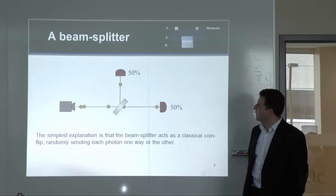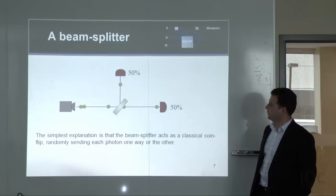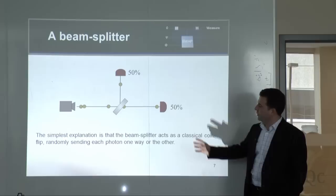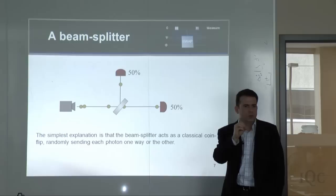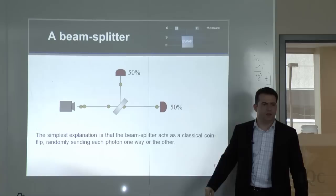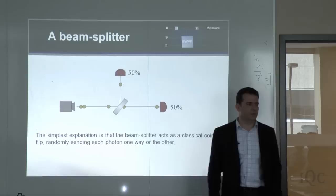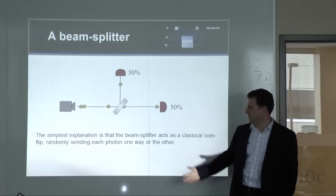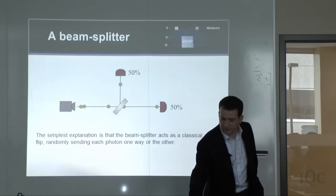Let me do quantum mechanics 101. You have a particle source — say photons, single particles of light — coming through a beam splitter. Half of the photons get detected here and half get detected there, but they remain whole. We're not splitting the photons; it's an all-or-nothing thing. These could be electrons, neutrons, or buckyballs. You don't need quantum mechanics to explain this — it's just some classical random process that randomly selects which photons go straight through and which get deflected.